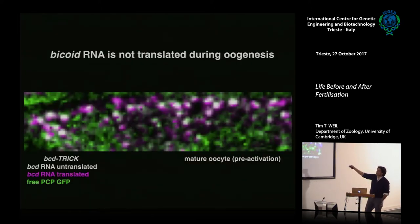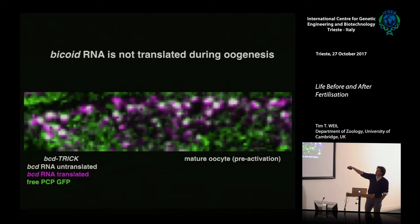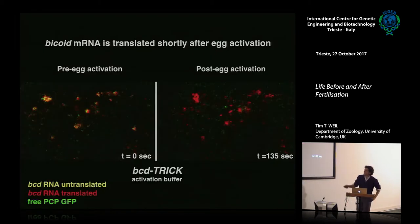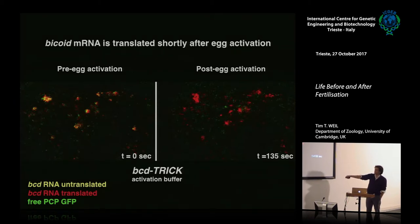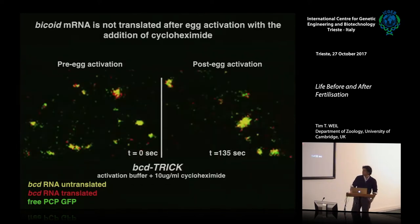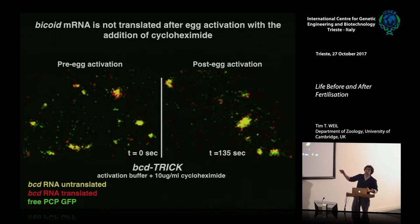Using this system in the mature oocyte, untranslated RNA shows both magenta and green, appearing as white particles with both sets of stem loops. After we activate the egg, very quickly we no longer see green associated with the RNA — we've gone through the first round of translation, knocking off the proteins from the coding region. As a control, we used cycloheximide, which results in maintaining both colors, meaning ribosomes couldn't move through and the RNA remains untranslated.